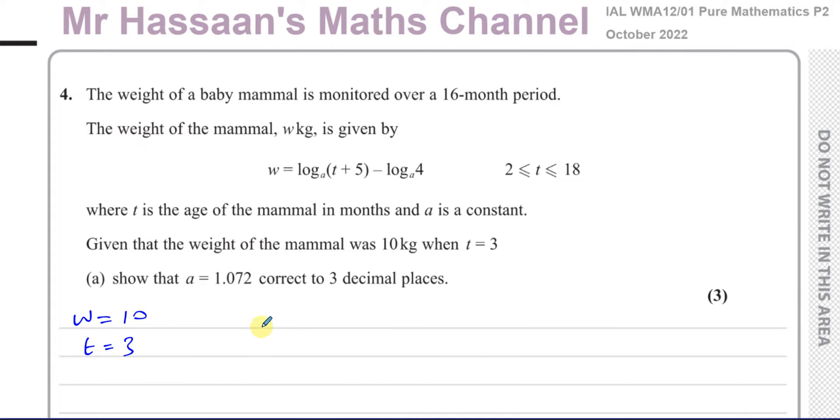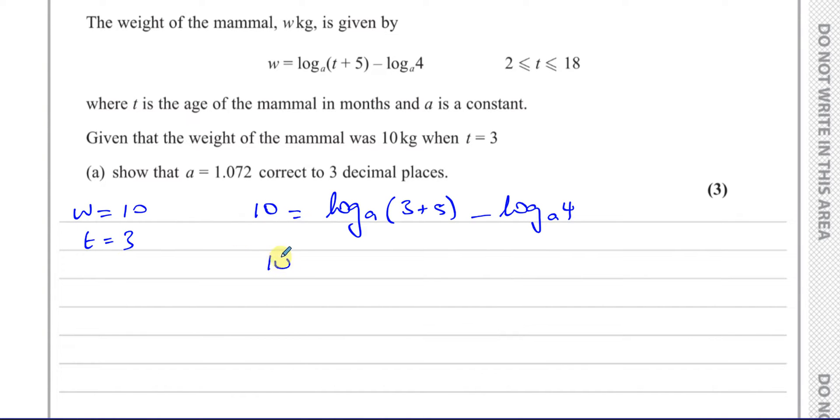So if I replace in the equation w with 10 and t with 3, and I rearrange this now to make a the subject. So first of all, I've got to combine these two logarithms together. So this is like 10 equals log base a of 8 minus log base a of 4.